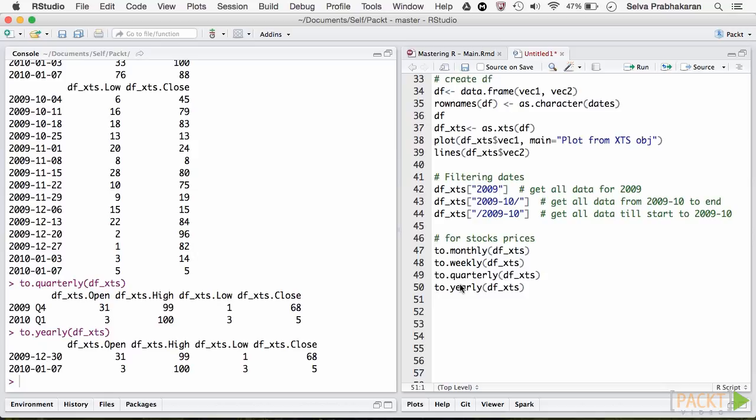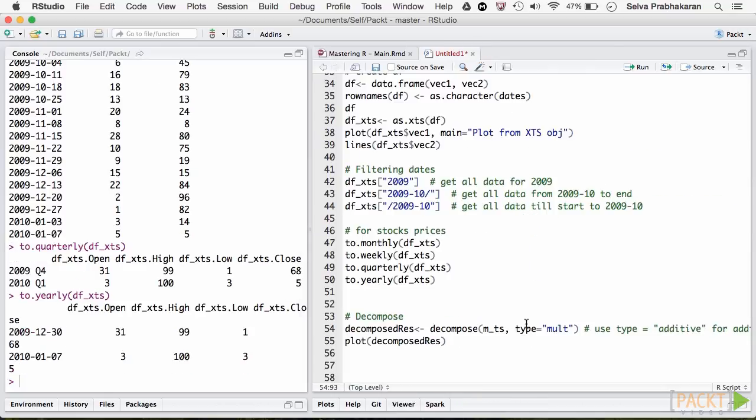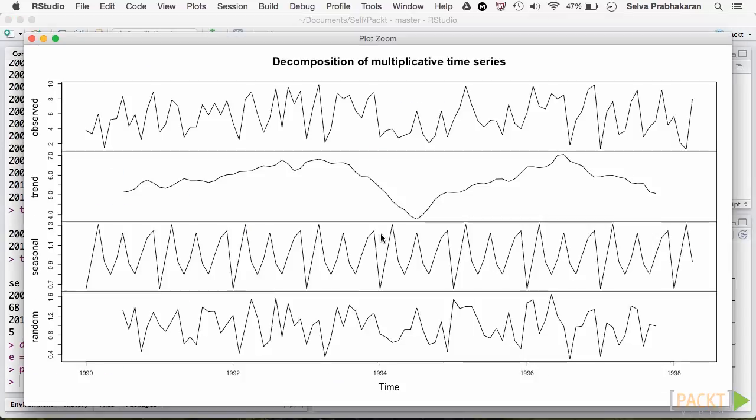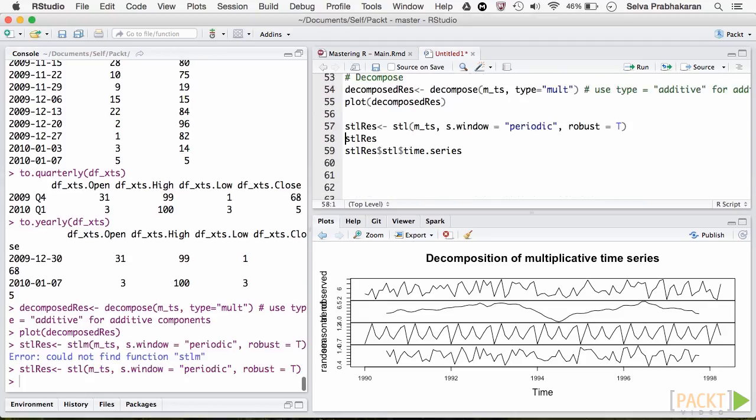Coming back to the topic, let's decompose the monthly time series to its components. Every time series consists of the seasonal, trend, and the remainder components. This plot shows one such decomposition. These components can be extracted using the STL function.